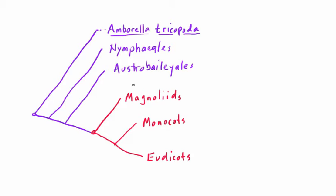So if we look at this part of the tree, we're looking at the relationships between the Magnoliids, the Monocots, and the Eudicots. This is actually one out of three possibilities.